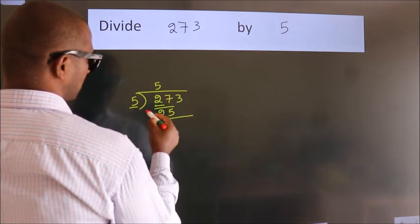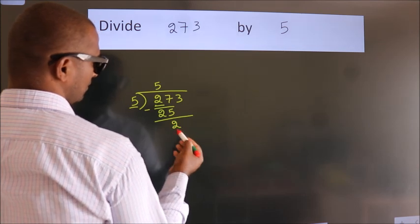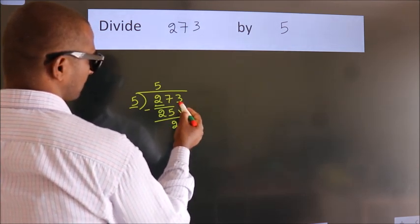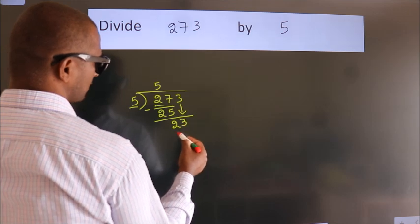Now we should subtract. We get 2. After this, bring down the next number, so 3 comes down, giving us 23.